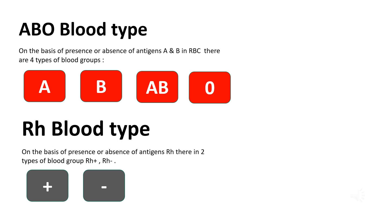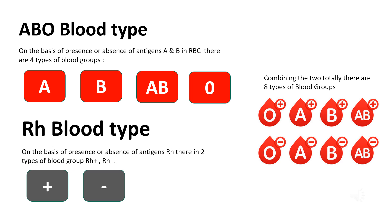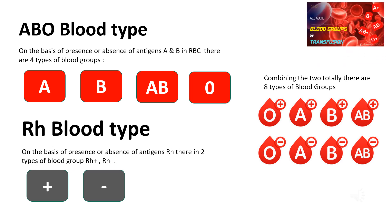The next is the Rh blood type, where on the basis of the presence or absence of the antigen Rh, there are two types: Rh positive and Rh negative. Combining the two together there are totally eight types of blood groups: O positive, O negative, A positive, A negative, B positive, B negative, AB positive and AB negative. If you would like to know more about blood groups, do visit my previous video all about blood groups and transfusion.